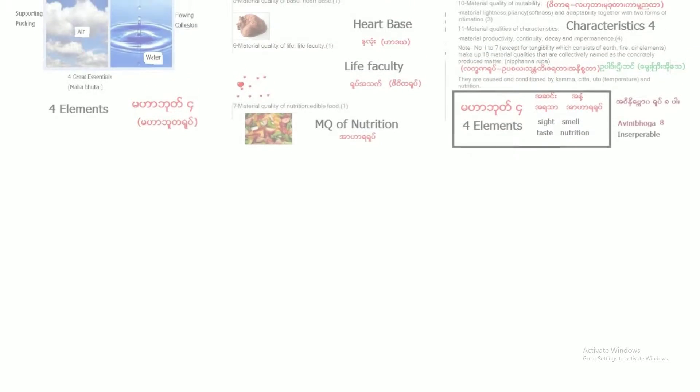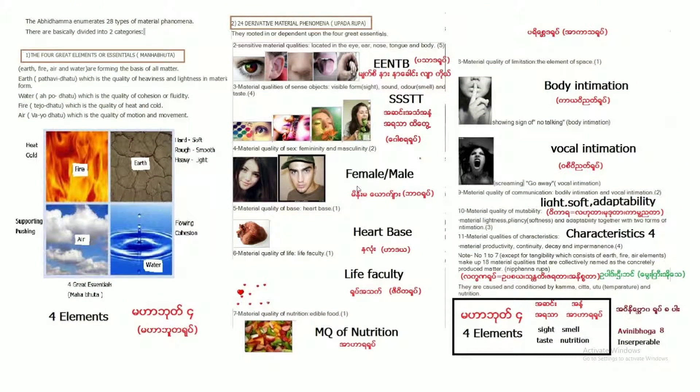So there are 28 types of matter. Abhidhamma enumerates 28 types of material phenomena, basically divided into two categories. One is four great elements or Mahabhuta. So there are, we know that, fire, earth, water, and air elements.